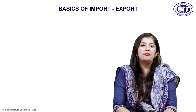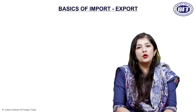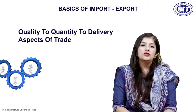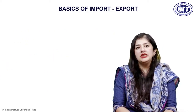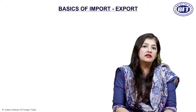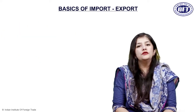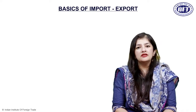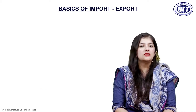A contract is usually a balanced document, a balanced agreement between the two parties, and hence important clauses or important aspects of a contract range from quality to quantity to delivery aspects of trade. In today's session, we'll discuss various aspects of a contract including clauses which govern movement of goods as well as movement of payment from one party to another.